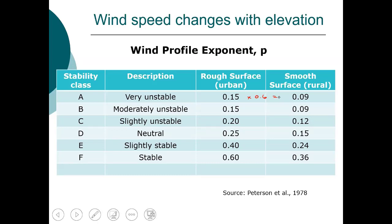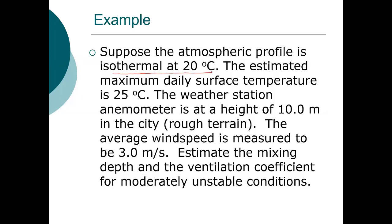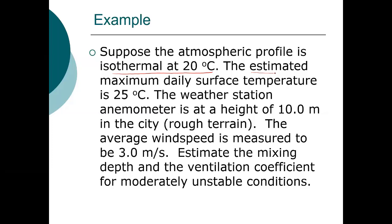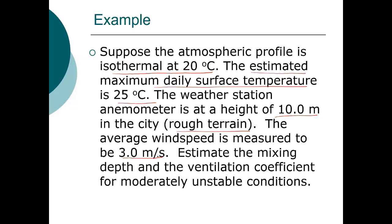We'll use this data set through at least next week when talking about transport. In this example, we have an atmospheric profile that is isothermal at 20 degrees C. The estimated maximum daily surface temperature is 25 degrees C. The anemometer is at 10 meters in the city — rough terrain — measuring 3 meters per second. We're asked to estimate the mixing depth and the ventilation coefficient for moderately unstable conditions.